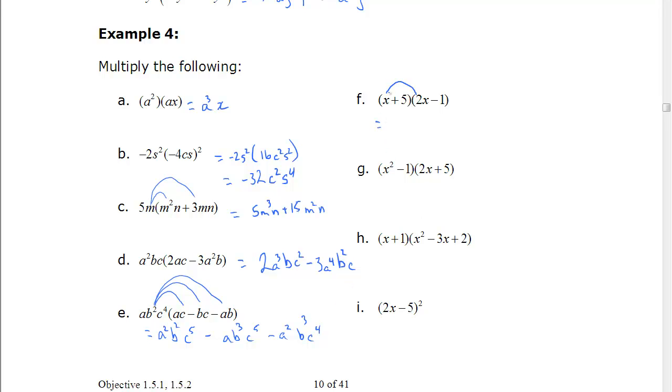And this is the FOIL method, double distribution, expansion, whatever you want to call it. As long as everything gets multiplied together. So 2x squared plus 10x minus x minus 5. Make sure you simplify. Put the like terms together. So minus, no, plus 10 minus 1 is plus 9 minus 5.